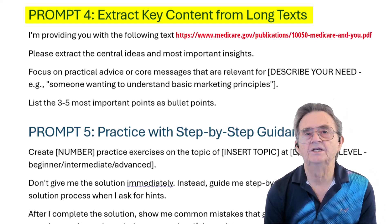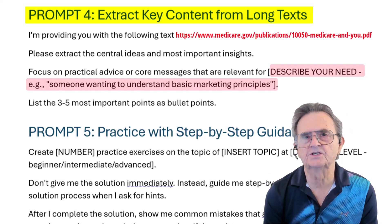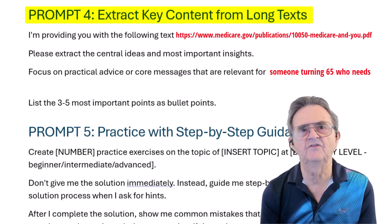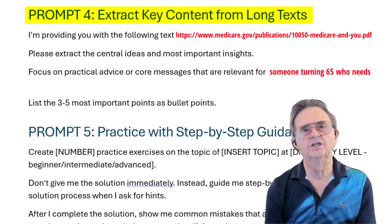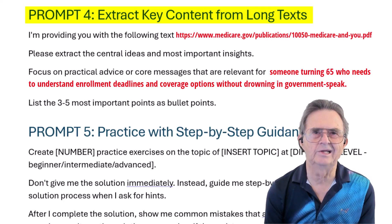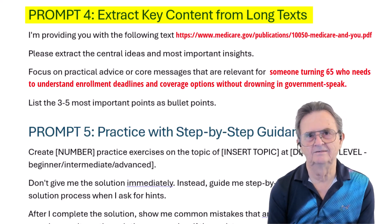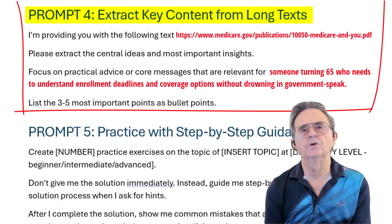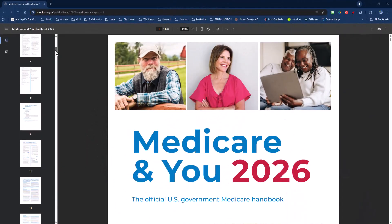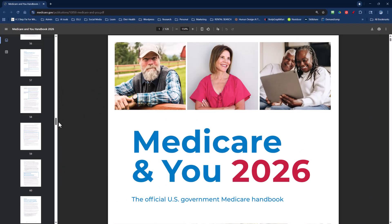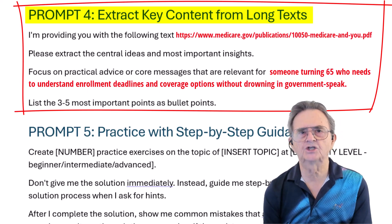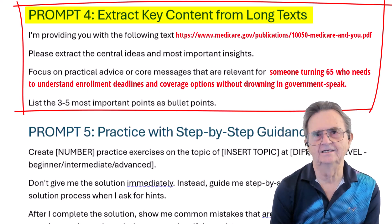And this is key: describe your specific need. For the Medicare book, I wrote 'Someone Turning 65 Who Needs to Understand Enrollment Deadlines and Coverage Options Without Drowning in Government Speak.' This is your research assistant — it cuts 128 pages of government documentation or academic jargon and gives you just the actionable stuff you actually need.